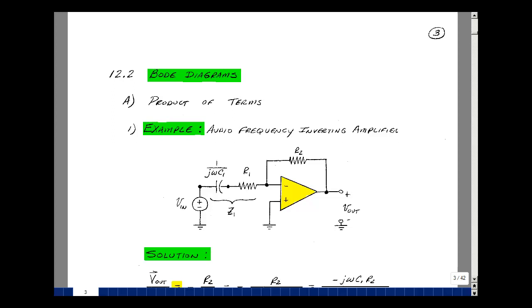Let me introduce the problem through an example. Consider this audio frequency inverting amplifier, which consists of an op amp with a feedback resistor R2 and an input impedance called Z1, which is a series combination of an R and a C.